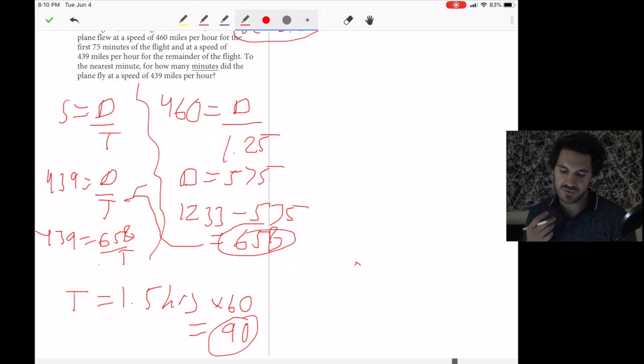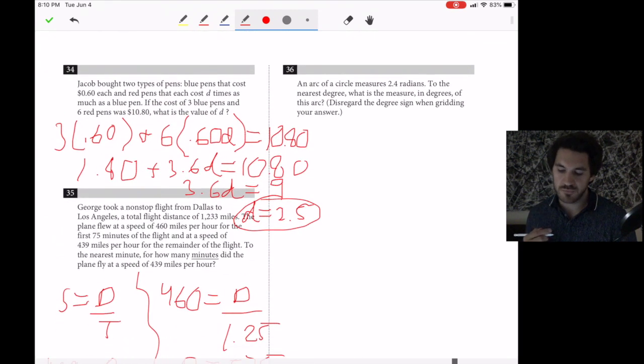Number 36. An arc of a circle measures 2.4 radians. To the nearest degree, what is the measure in degrees of this arc? To convert from radians to degrees, multiply by 180 over π. So 2.4 times 180 over π. When we do this calculation, we get a decimal between 137 and 138. They'll accept either 137 or 138 degrees.